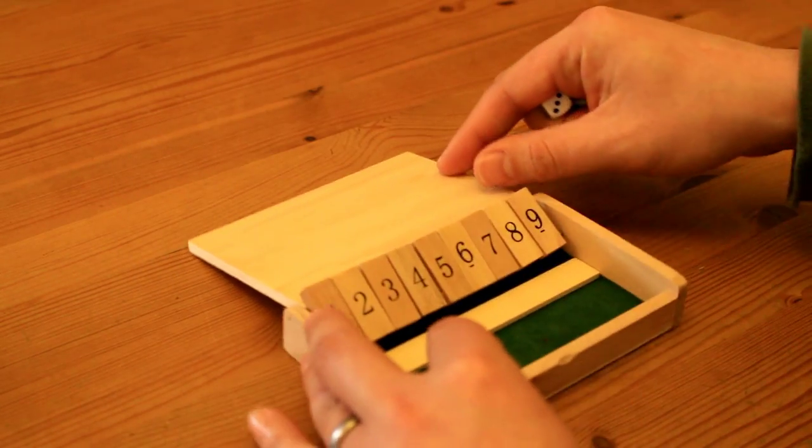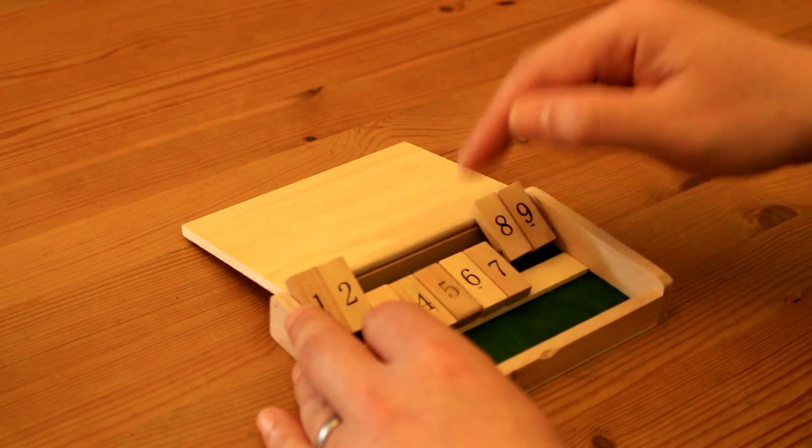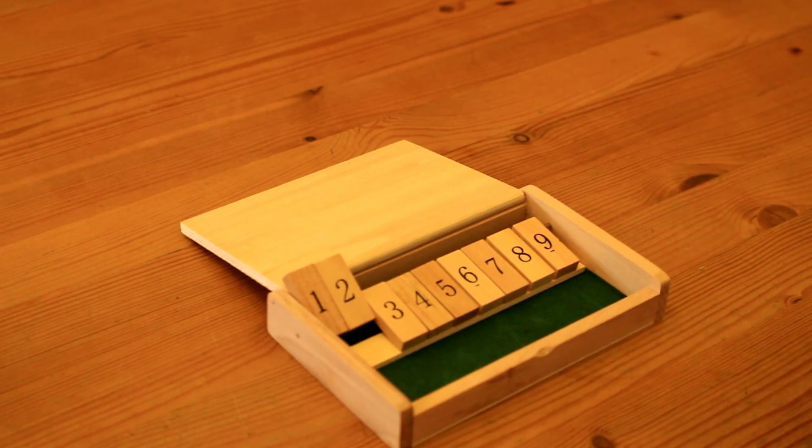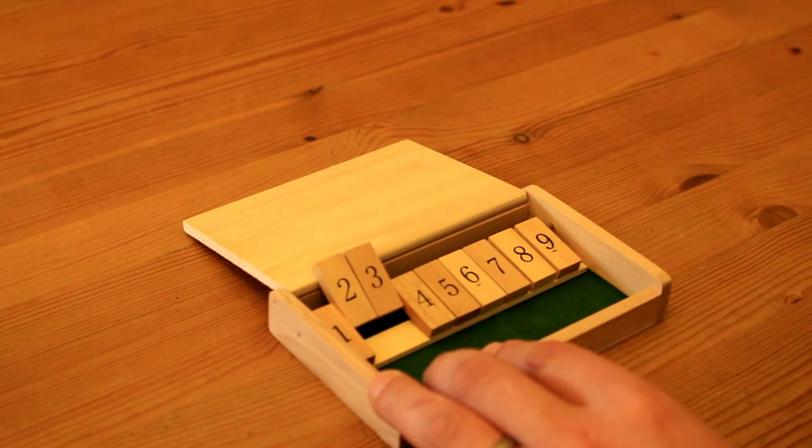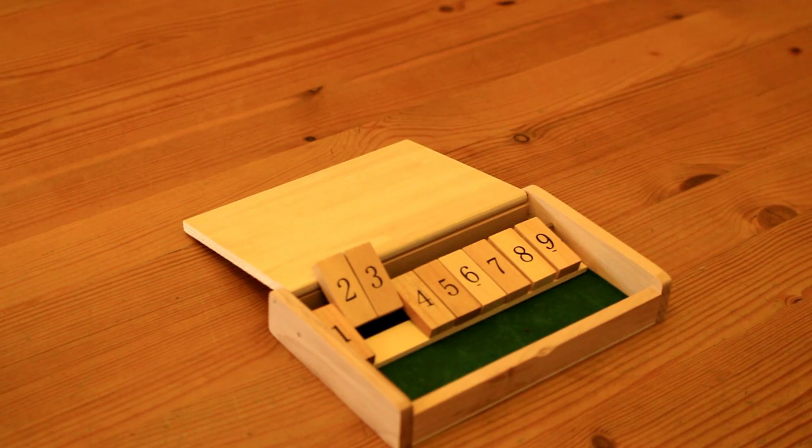If the person doesn't shut the box, the remaining tabs that are up and unclosed are added up and that is their score. So in this case it would be three. It would be passed on to the next person and if they had five, the person who got three would win. Hopefully you get the idea.